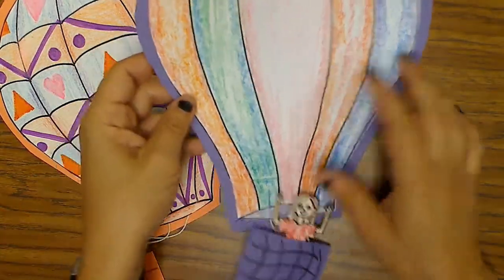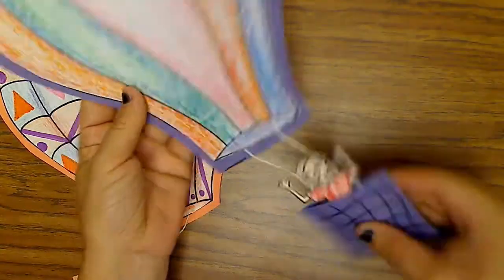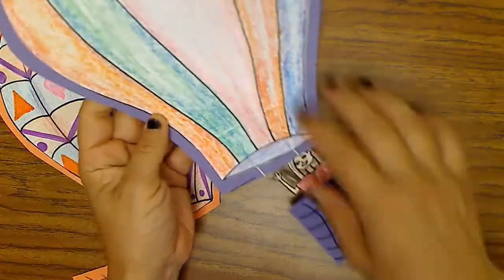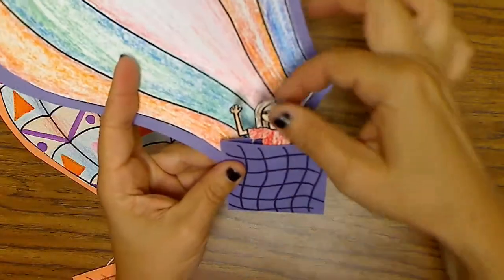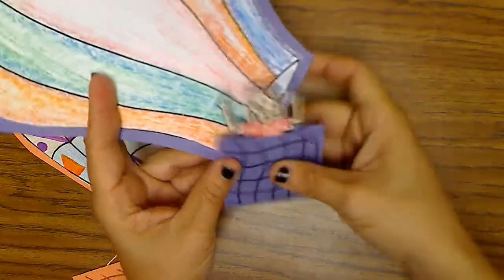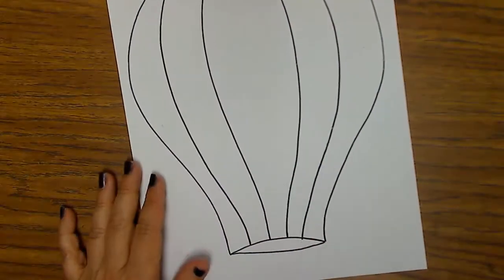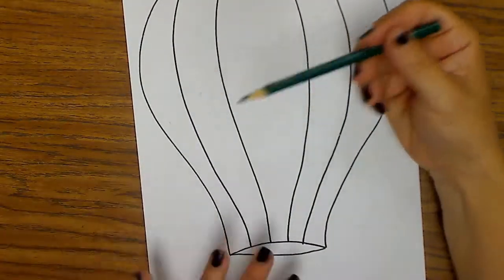For this hot air balloon project, notice that it's actually two pieces - it has the balloon part and then a little basket with a person in there too. You're going to color your balloon however you want using colored pencils, markers, or crayons.